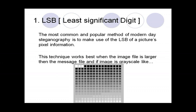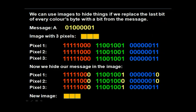In LSB — the most popular and common method — we make use of the LSB's pixel information. This technique works when the image file is larger than the message file and if the image is grayscale. In LSB technique, we mostly use the grayscale image because when compression is applied, the image is not sacrificed, while in a color image the color effects are slightly sacrificed.